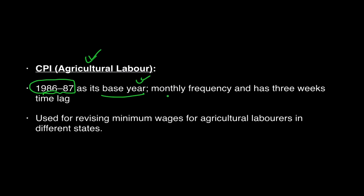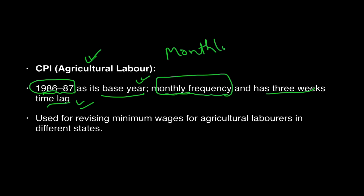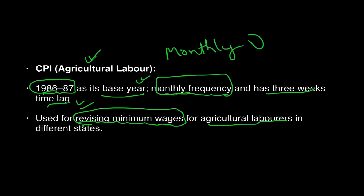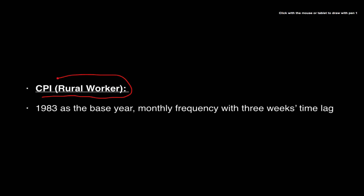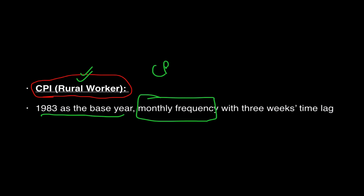CPI for Agricultural Labour has 1986-87 as the base year, with monthly frequency and three weeks' time lag. It is used for revising minimum wages for agricultural laborers in different states. CPI for Rural Workers — covering non-agricultural rural workers — uses 1983 as the base year, is also calculated monthly, and is used for the benefit of rural workers.